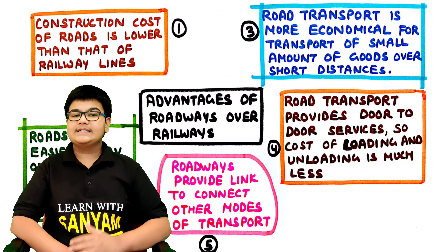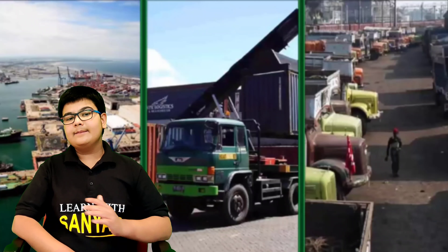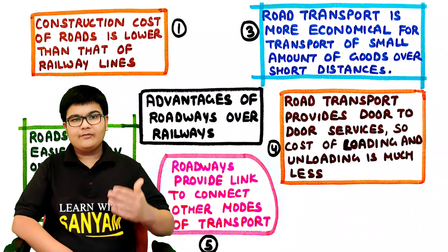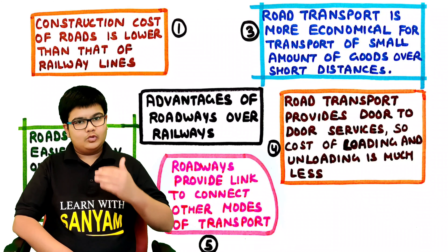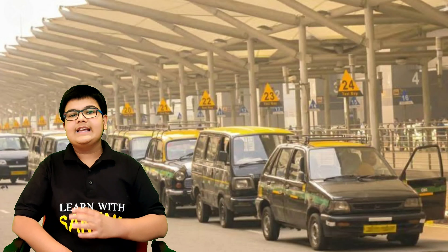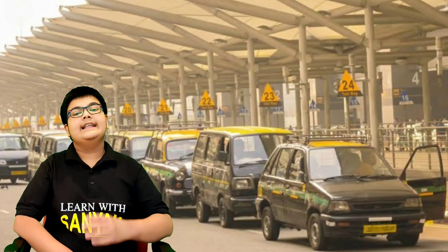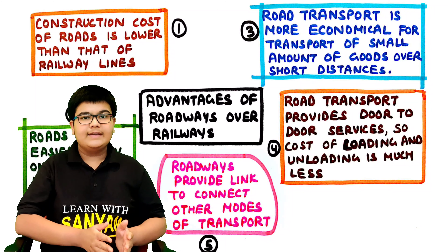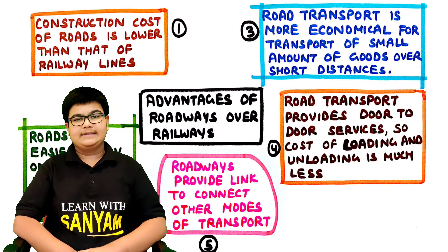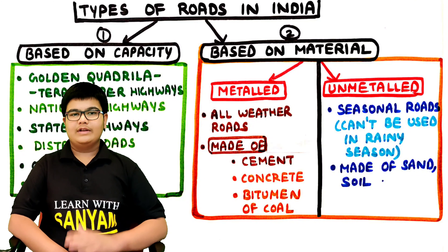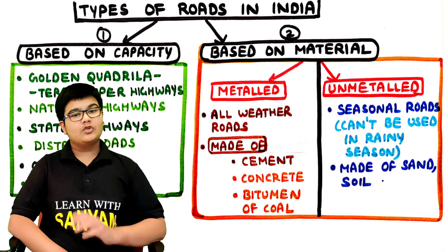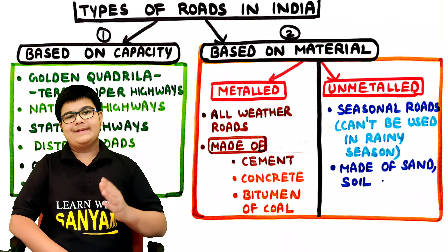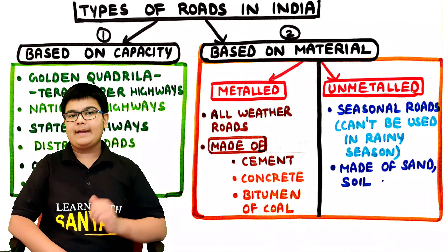Fifth, roadways provide a link to connect other modes of transport. For example, to reach the airport to take a plane, you will obviously have to take a car. In this way, roads help to link other modes of transport like airways, waterways and railways. Now, let's see the types of roads in India. Roads can be classified on two bases: first, on the basis of material, and second, on the basis of capacity.